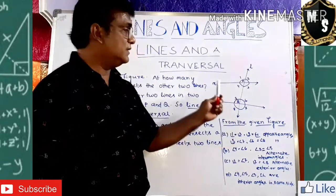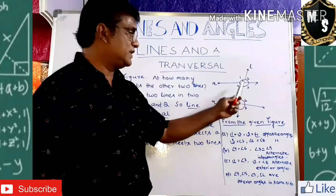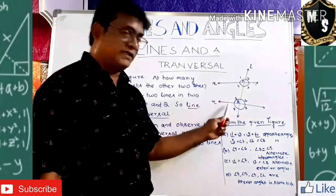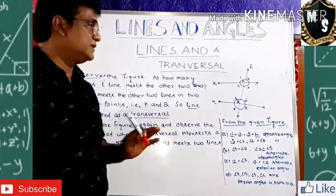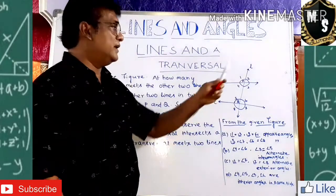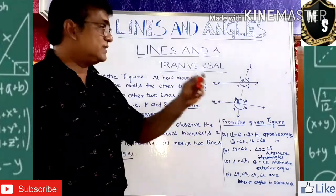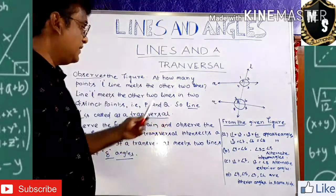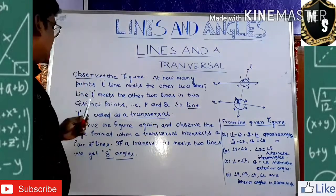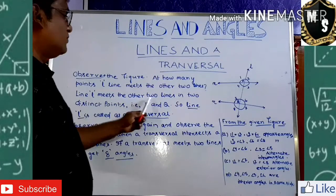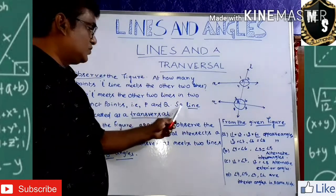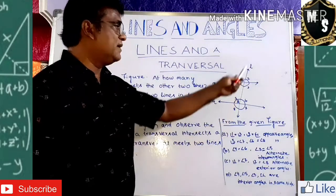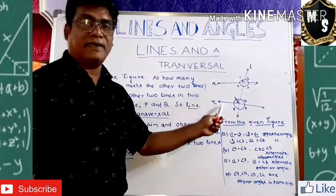When a line intersects two other lines at two distinct points, that line is said to be the transversal for those two lines. So a transversal is a line which intersects two other lines at two distinct points. Here, line L meets lines M and N at distinct points P and Q, so line L is called a transversal for lines M and N.